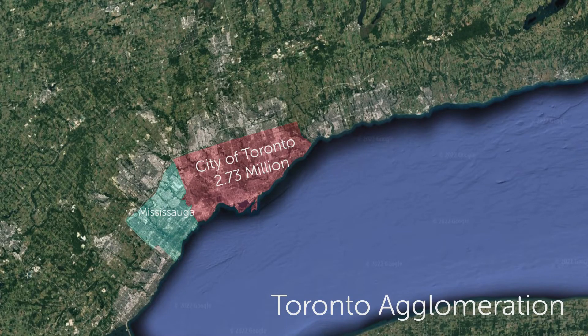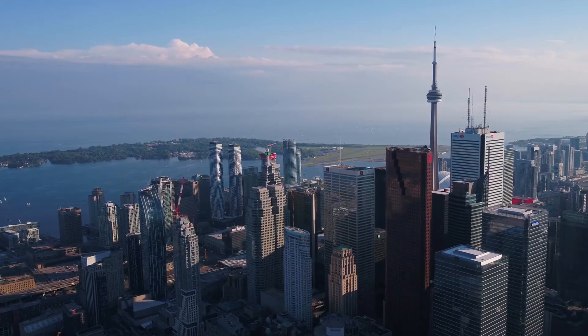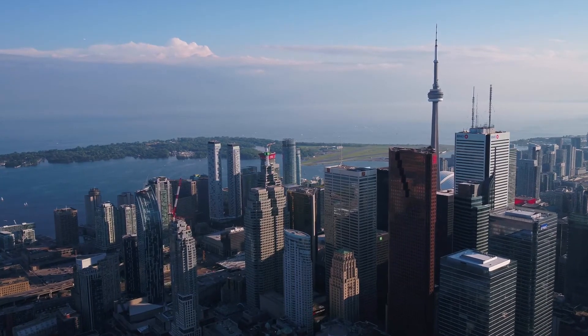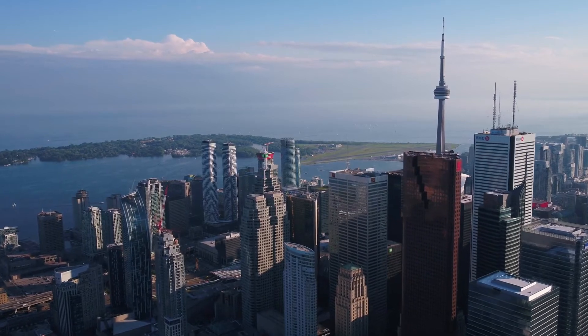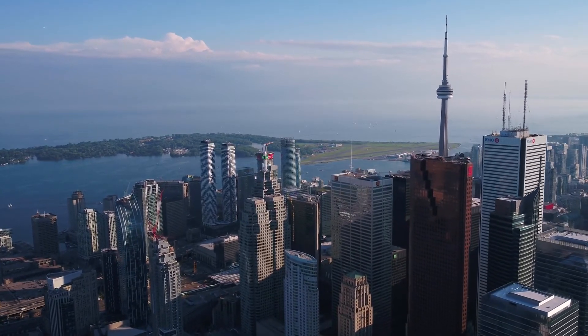Let's spend some time looking at communities in the GTA. The largest being Mississauga, which is surprisingly the sixth largest city in Canada, hosting a population of 721,000. The city is almost unknown to most Canadians, as it is completely shadowed by its famous and larger neighbor, Toronto.